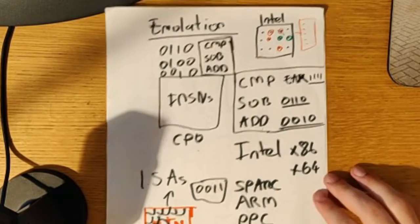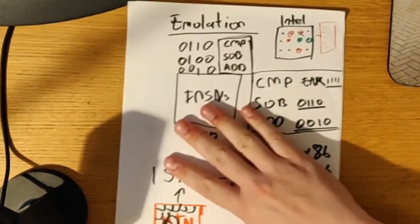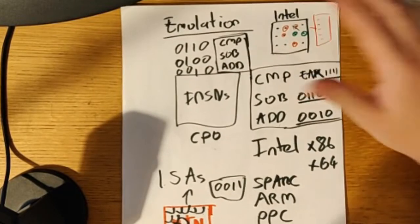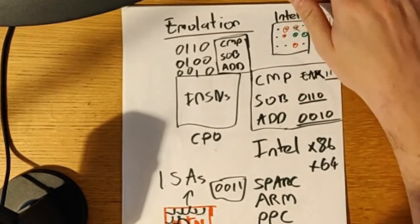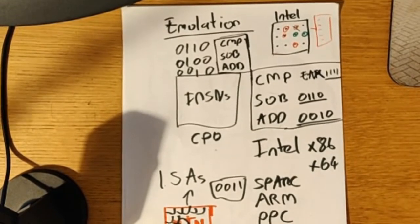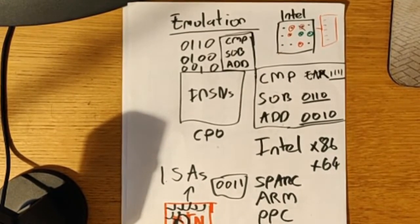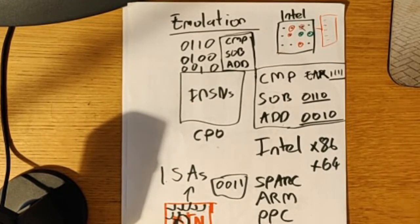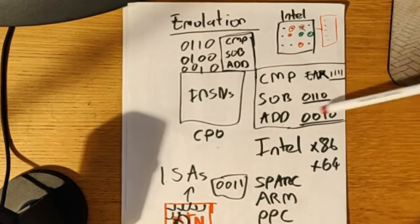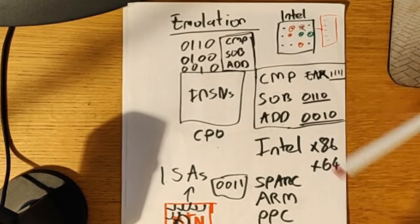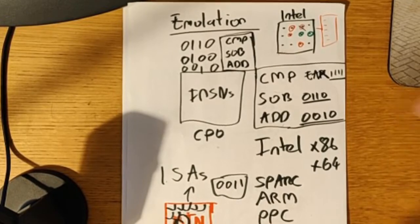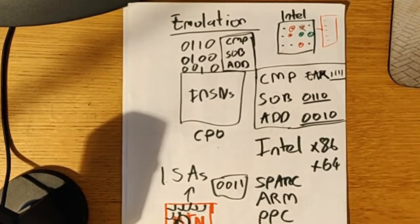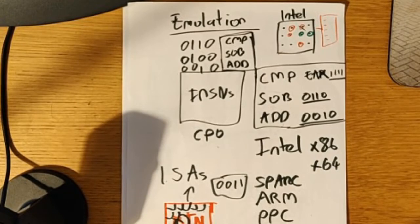Emulation simply means you have a system and you want that system to act as another system — to emulate it. You have a system and you want it to act in a similar fashion to another system. Specifically, when we talk about systems here, we're talking about one instruction set running a different type of instruction set.